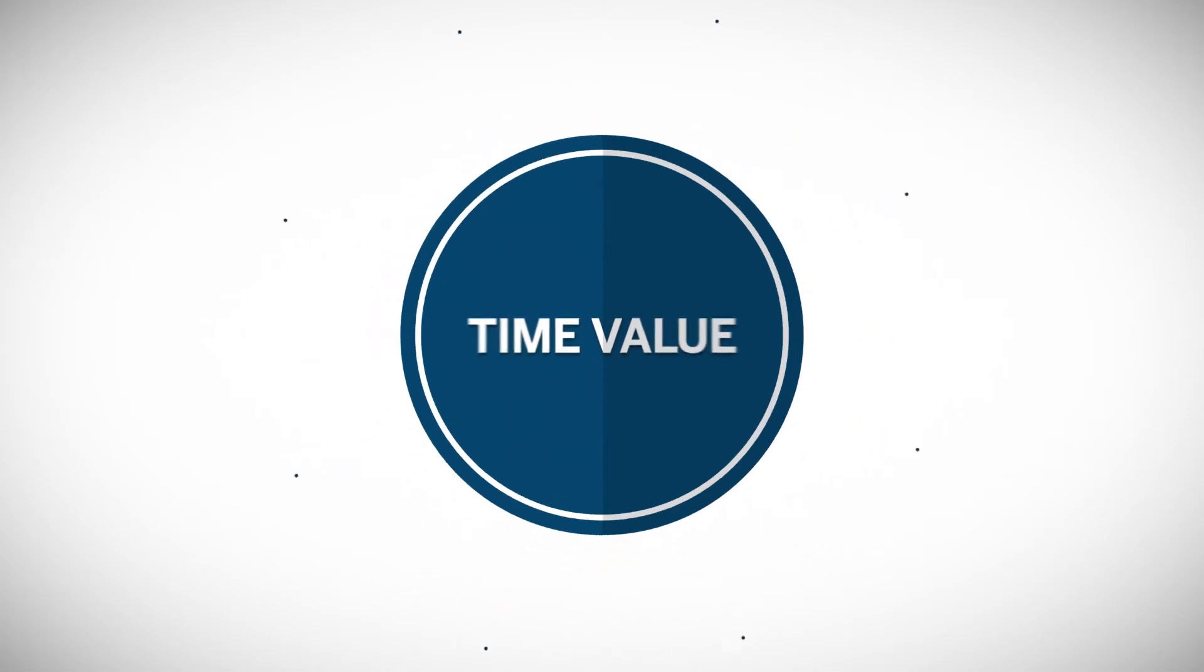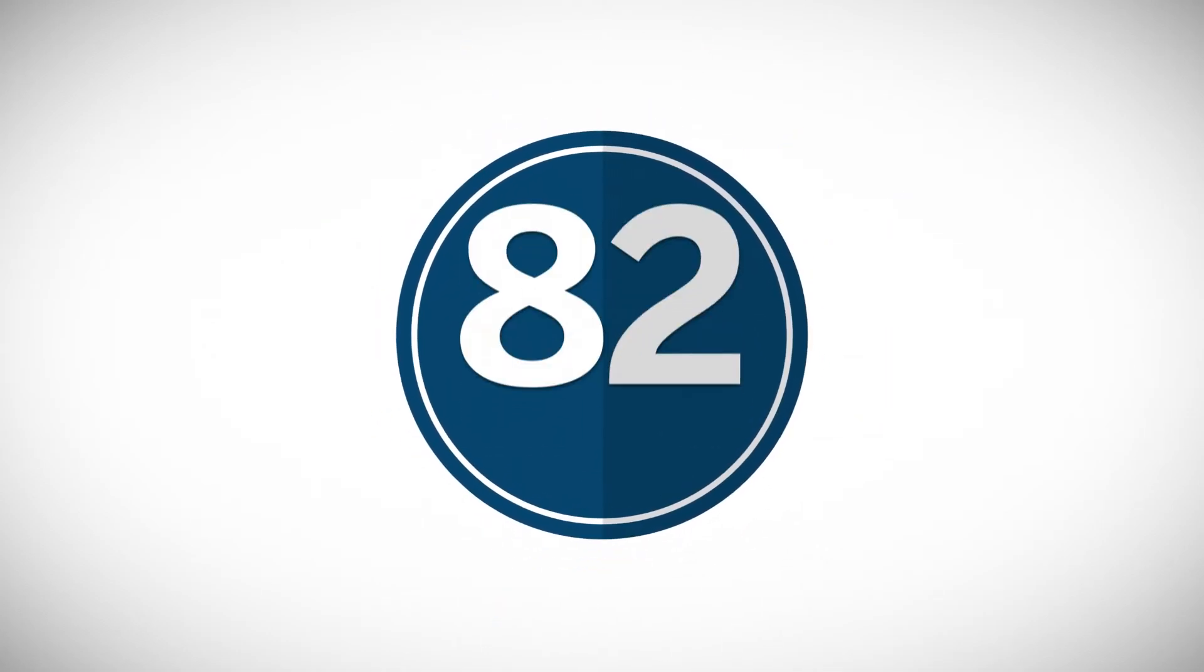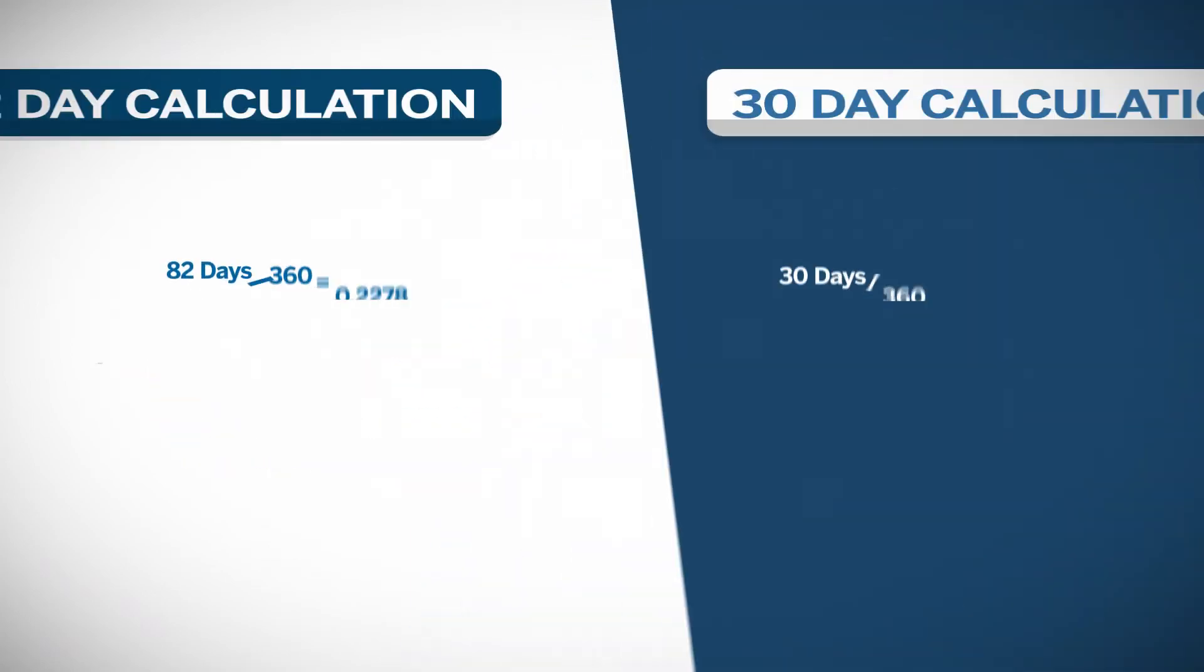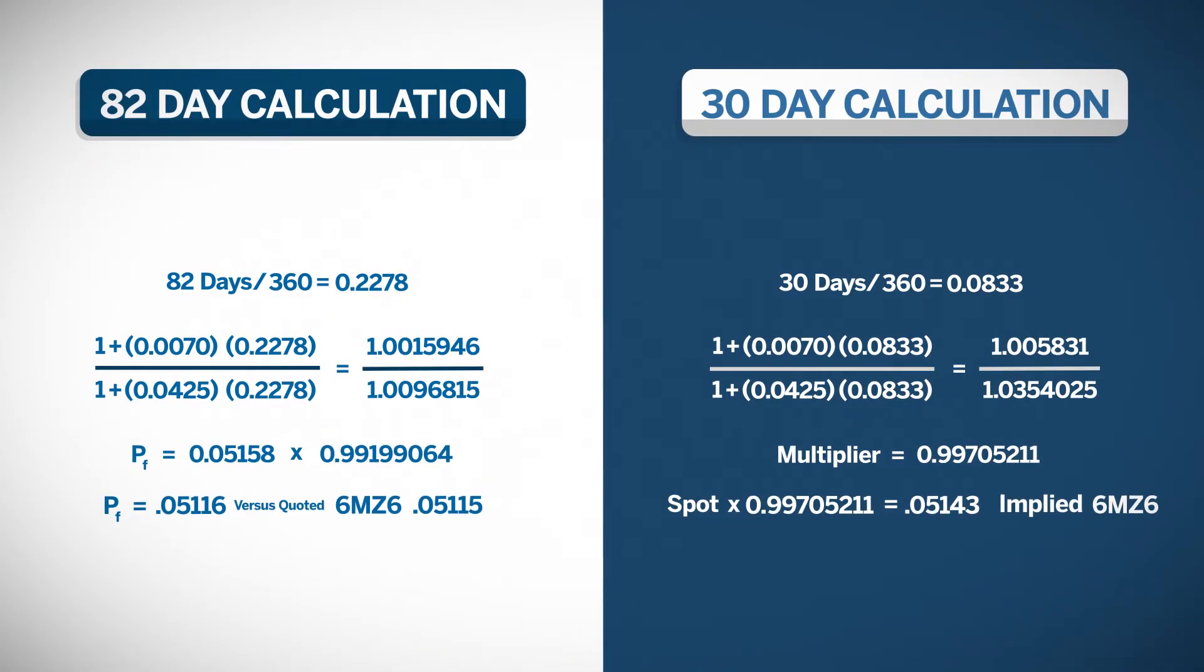Let's take this further. We will change the time value to expiration from 82 days to 30 days. How does this affect the multiplier? Using the same calculations, the new multiplier is 0.99705, which is higher than our multiplier at 82 days. This means the futures price, while still lower, will be closer to spot. This is because of the erosion of the time value of money, or time decay.